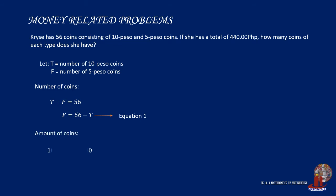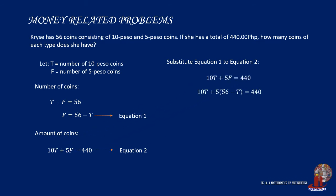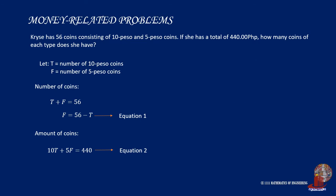The total amount of coins equals 440 pesos — consider this as equation 2. Substituting equation 1 into equation 2, we get 10T plus 5 times (56 minus T) is equal to 440. Distributing and expanding gives 10T plus 280 minus 5T is equal to 440, which simplifies to 5T is equal to 160. Dividing both sides by 5, T equals 32 (the number of 10-peso coins). Replacing T as 32 in equation 1, F is equal to 56 minus 32, giving 24 five-peso coins.